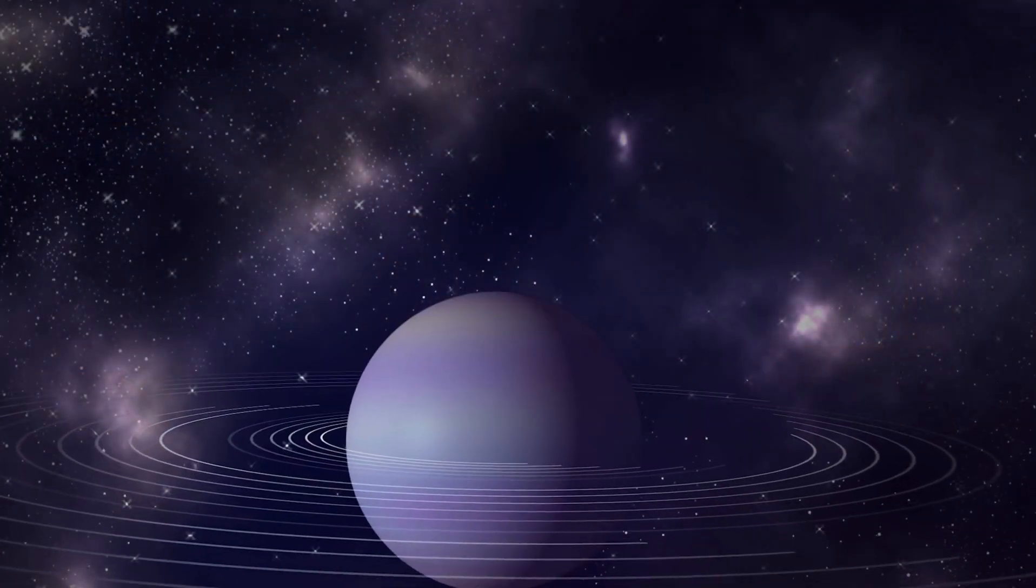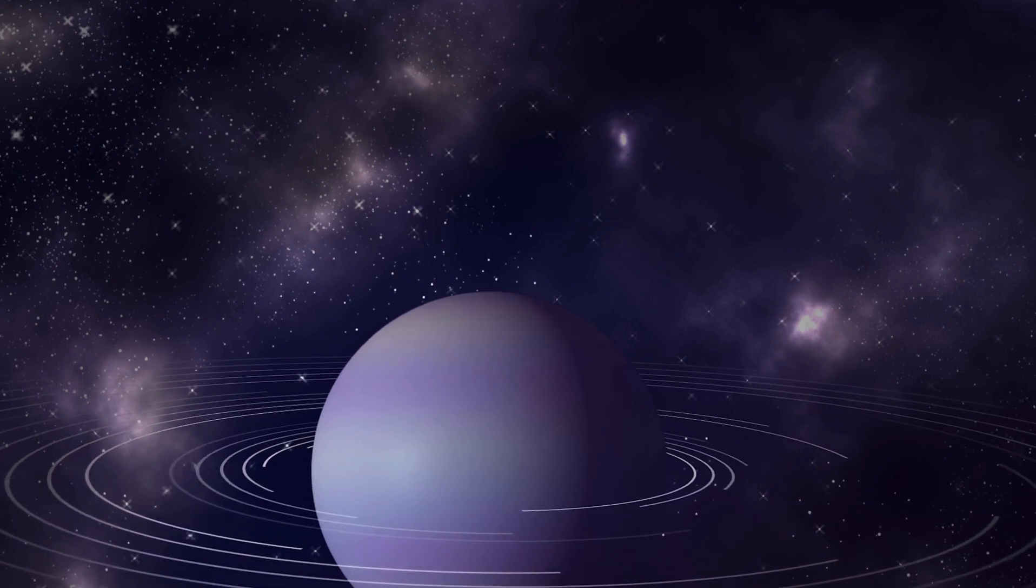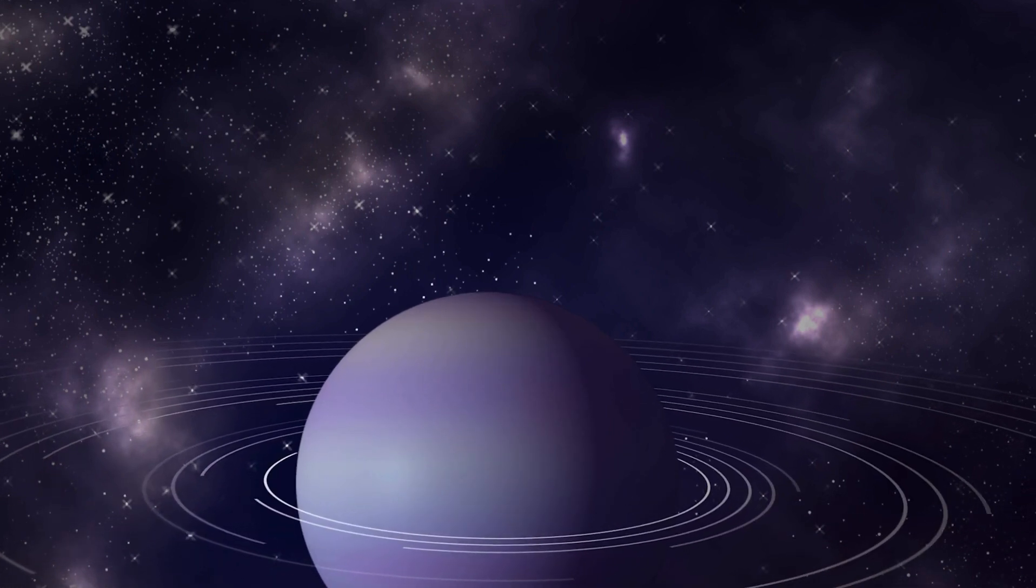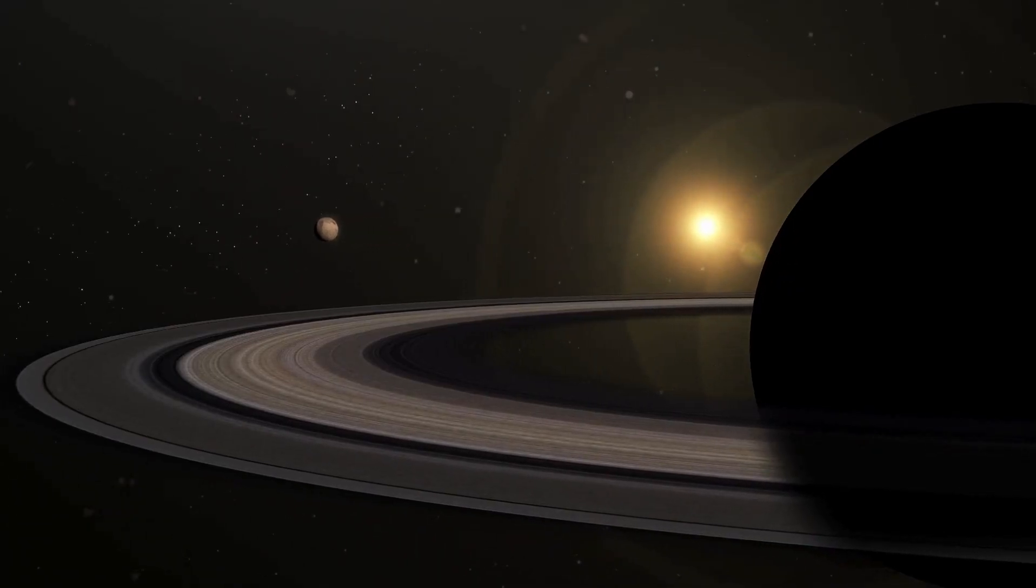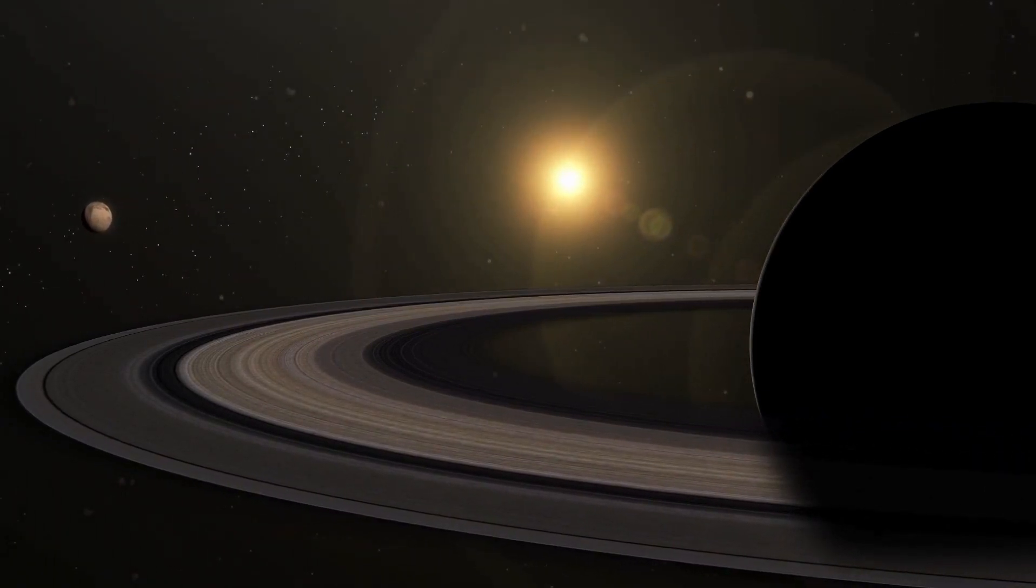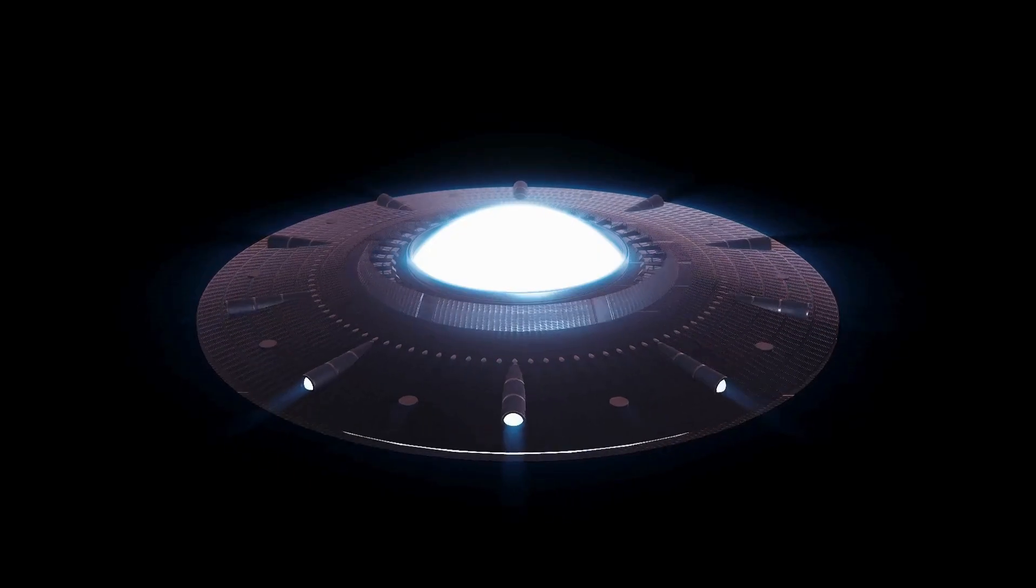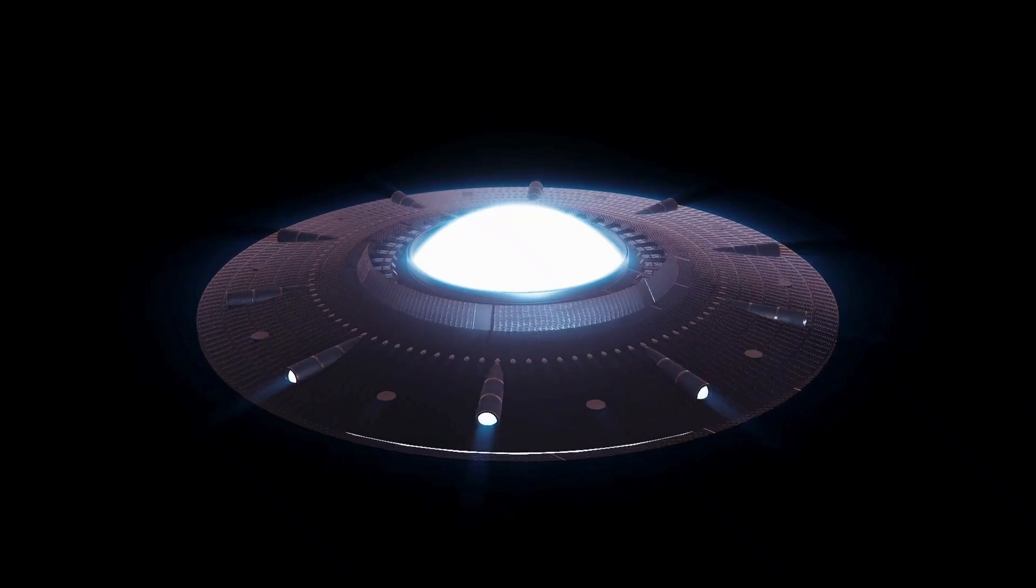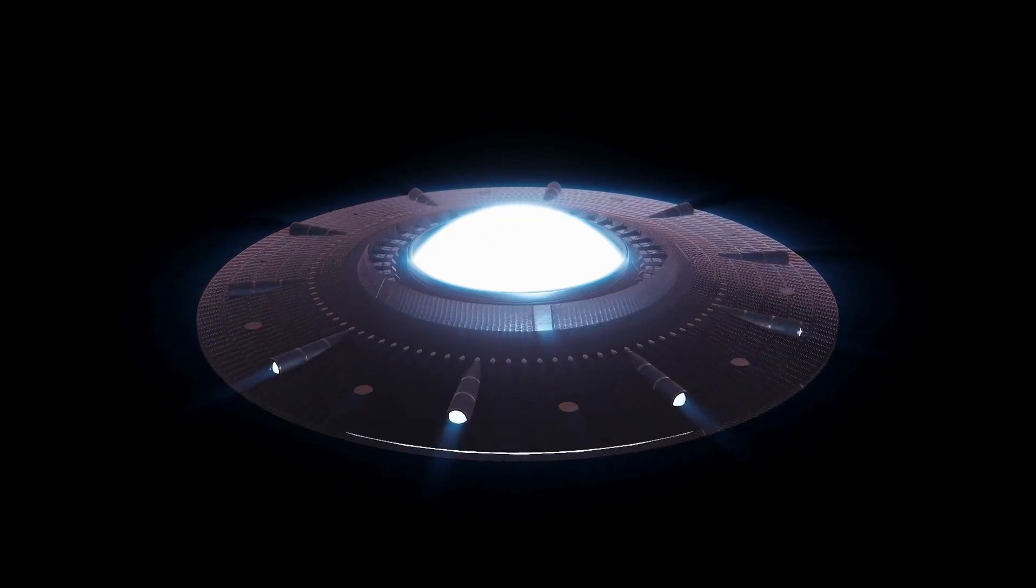In what could be one of the most groundbreaking discoveries of our time, scientists studying the star system Proxima Centauri have found what appears to be artificial lights on the planet Proxima b. This discovery could dramatically reshape our understanding of extraterrestrial life.